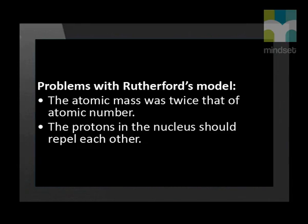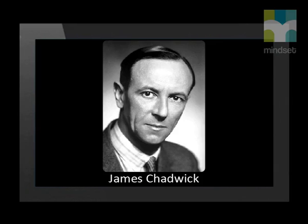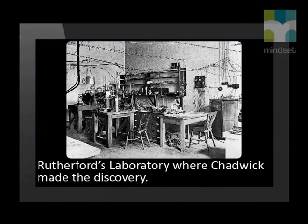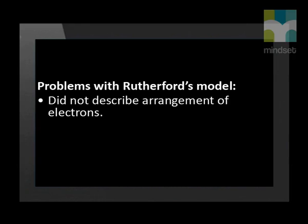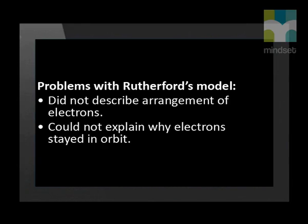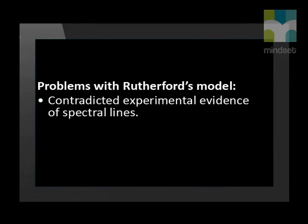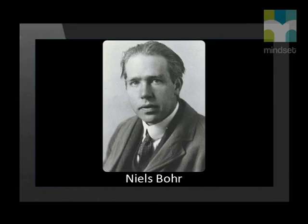Rutherford could also not explain why the nucleus did not fly apart due to the electrostatic repulsion between protons. The first of these problems was solved by an English physicist who studied under Ernest Rutherford at Manchester University — his name was James Chadwick. Rutherford had predicted the existence of a neutral particle in the nucleus, but it was Chadwick who discovered it in 1932. The discovery of the neutron explained the differences in atomic number and atomic mass. Rutherford's nuclear model was an improvement on Thomson's plum pudding model, but Rutherford didn't discuss the exact arrangement of electrons around the nucleus, and could not work out why the electrons stayed in orbit. The nuclear model also contradicted experimental evidence of spectral lines. This problem was finally solved by a Danish physicist named Niels Bohr. You will learn more about his work in another lesson.